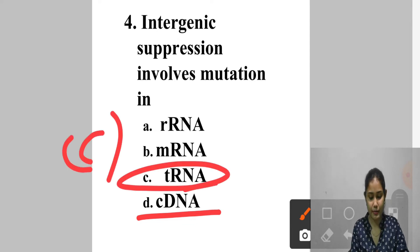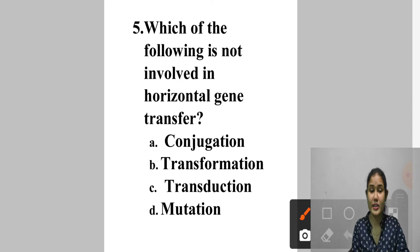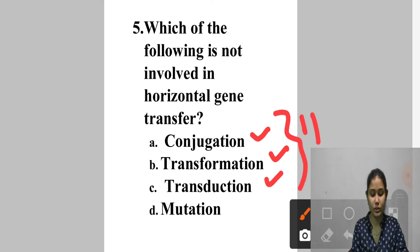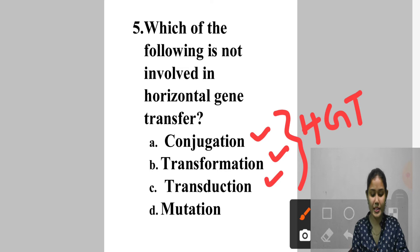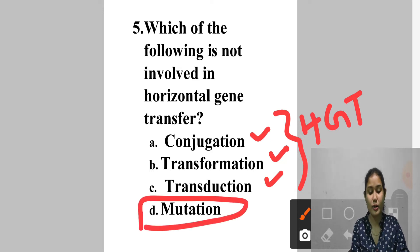Question 5: Which of the following is NOT involved in horizontal gene transfer? A. Conjugation, B. Transformation, C. Transduction, D. Mutation. Conjugation, transformation, and transduction are all involved in horizontal gene transfer (HGT) — the introduction of genetic material from one species to another by mechanisms other than vertical transmission from parents to offspring. So the answer is option D — mutation.